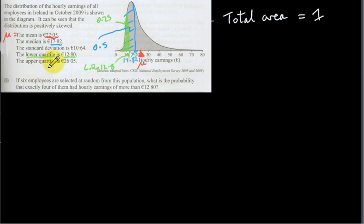And the upper quartile is the value of x such that three quarters of the data lie below it. So the upper quartile here is 26.05. That's about here. So three quarters of the data lie below 26.05. In other words, the area under the curve to the left of 26.05 is three quarters, or 0.75, which means that the area above the upper quartile, the area under the curve above the upper quartile, is 0.25.